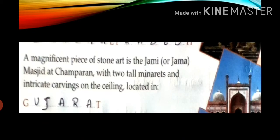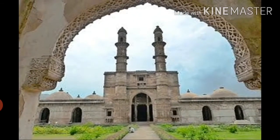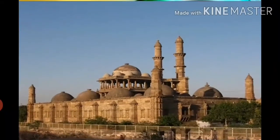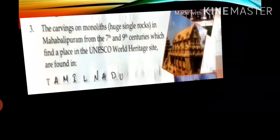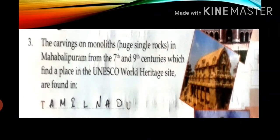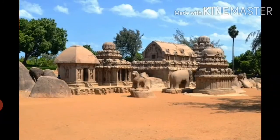Second one: a magnificent — meaning extremely beautiful — piece of stone art in Jami Masjid at Champaran, with two tall minarets and intricate — meaning interrelated — carvings on the ceiling. This mosque is located in Gujarat.